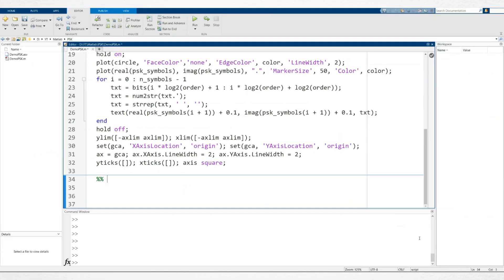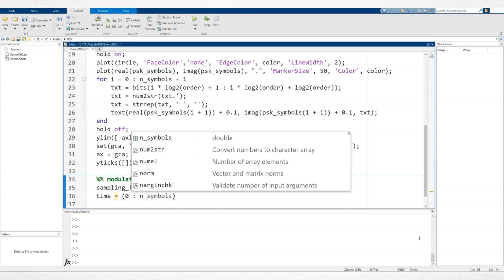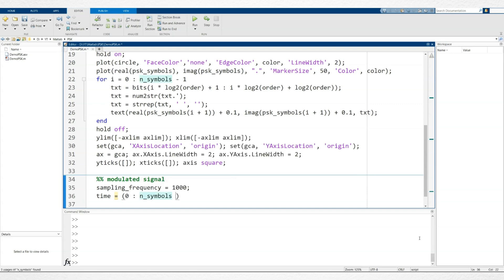Now, let's move on to the next part, where we modulate the carrier wave using these PSK symbols. To do this, we first need to define a sampling frequency, which determines how many samples are generated per second of the carrier wave. Next, we generate the time samples. Since we want 1 second of signal per symbol, and we have 6 symbols, this results in 6000 samples. After dividing by the sampling frequency, the time values will range from 0 to 6 seconds.